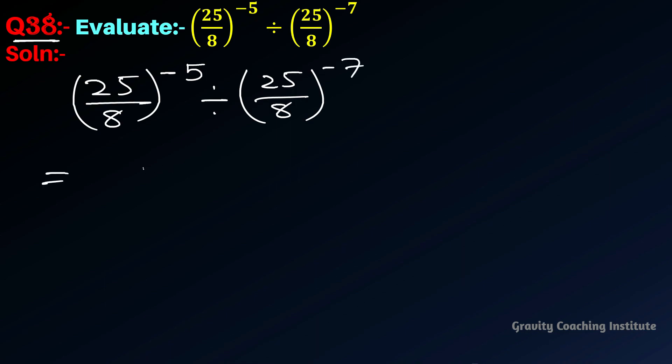When the base is the same in a division case, we can subtract the powers: -5 minus -7.